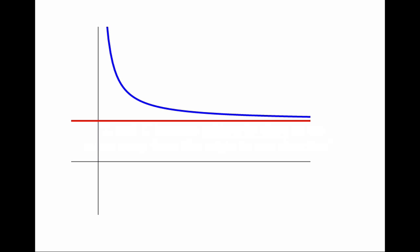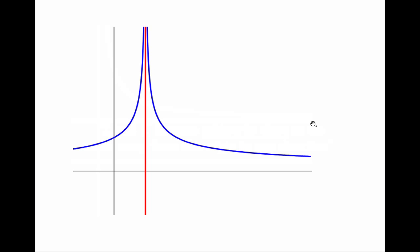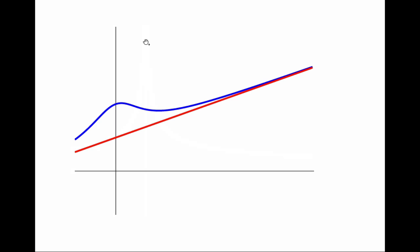Let's look at some examples. I have the graph of a function in blue and a line in red. Here it is the case that when I move away from the origin horizontally to the right, the two become arbitrarily close — the distance between them has limit zero. The same thing happens with a vertical line: when I move upwards, the distance has limit zero. And the very same thing happens when the line is slant.